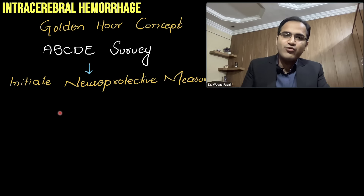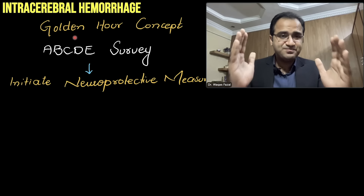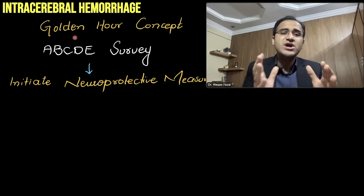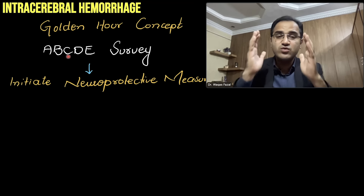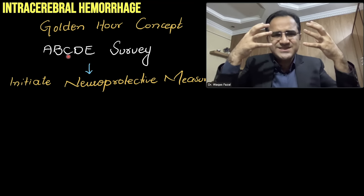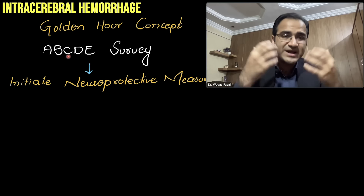When working in an emergency department and receiving a patient with headache and focal neurological deficit, the first step is an ABCD approach. Remember the golden hour concept — the first hour of management is most important. Before diagnostic investigations, you must initiate neuroprotective measures. First, protect the airways; if GCS is less than 8, intubate the patient and mechanically ventilate.